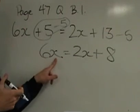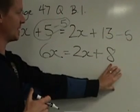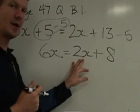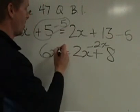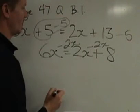Now I have 6x on this side. I have x's on this side, I have whole numbers on this side, but I still have this 2x on the right-hand side, and I want to get rid of that 2x. So I'm just going to subtract it, and I'm allowed to do that as long as I subtract that 2x from both sides.